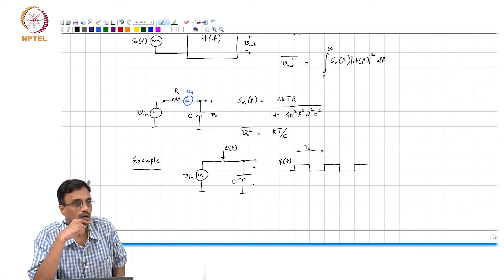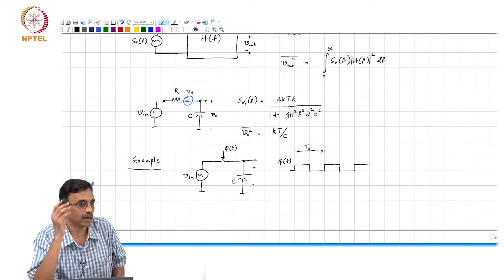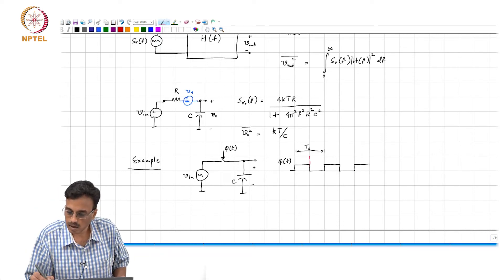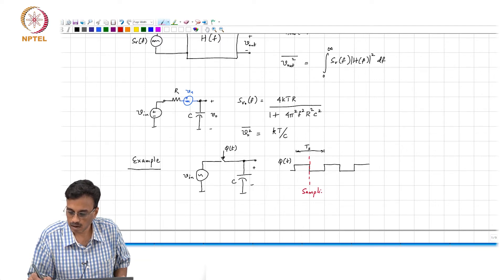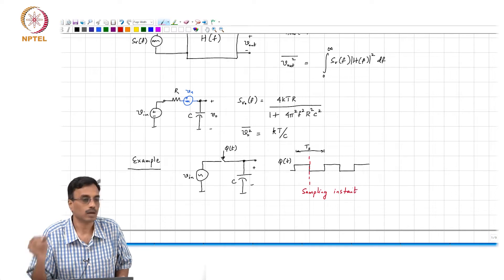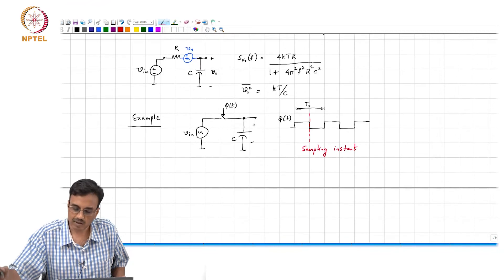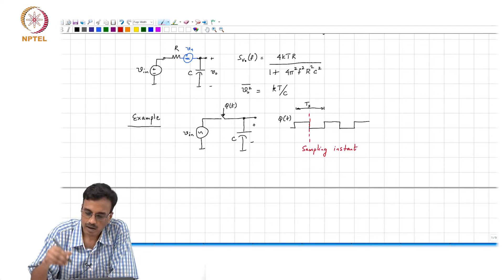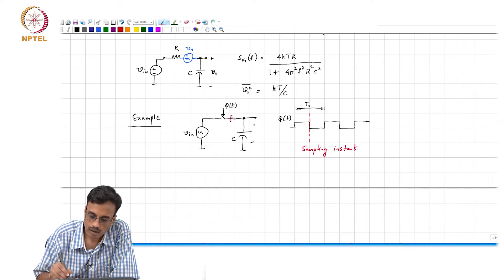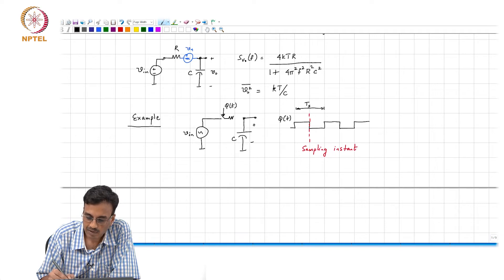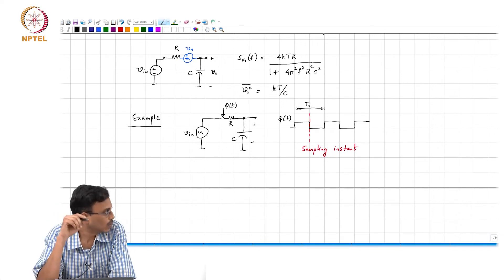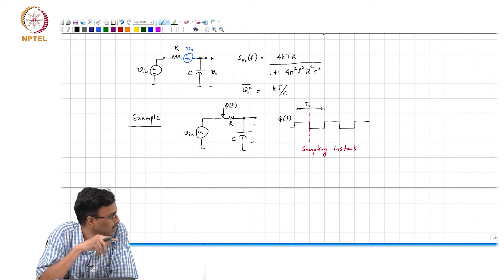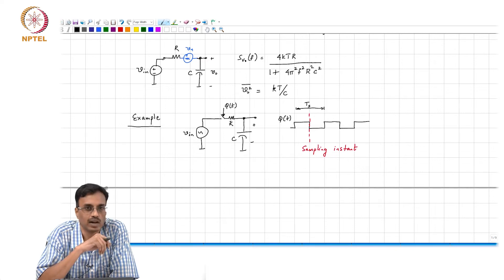What is the precise instant of sampling? It is the falling edge of phi of t. Of course, life is not as simple as this. In reality there is a whole bunch of non-idealities, the first one being that no switch is ideal, and it turns out that every switch will have associated with it a resistance. Therefore, the output will track the input, but there will be a small delay corresponding to the RC time constant. But more importantly, the resistor is also associated with a noise source.